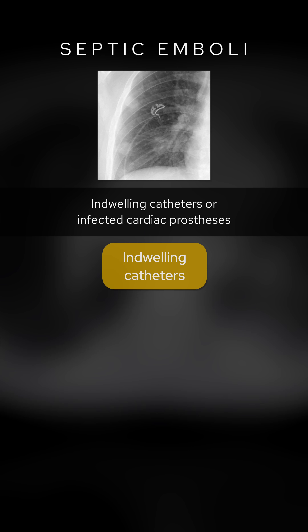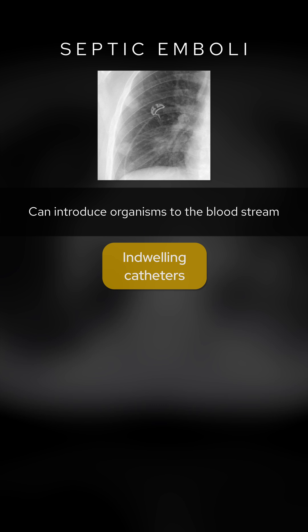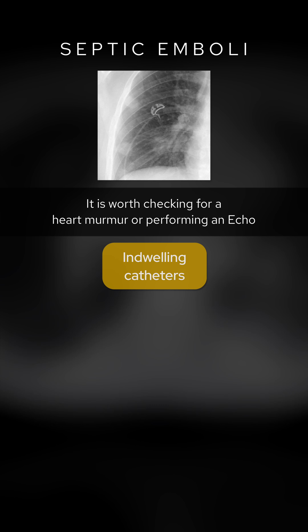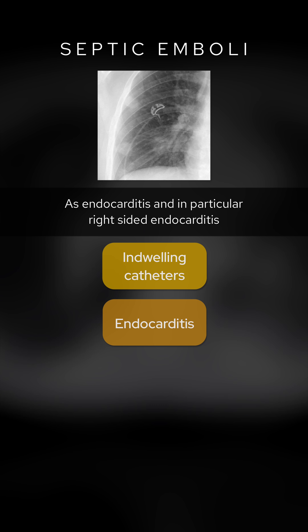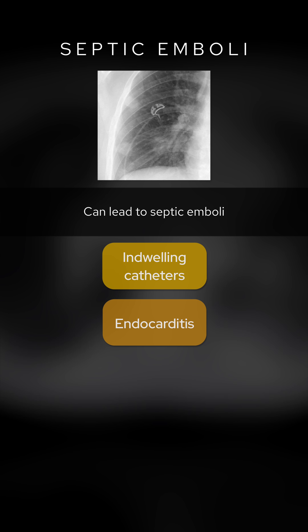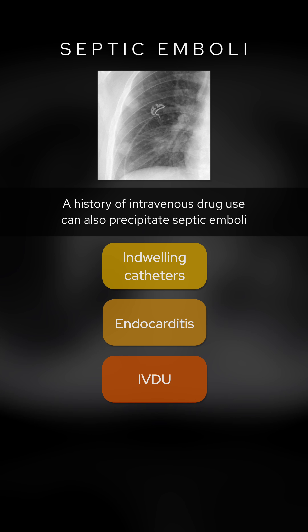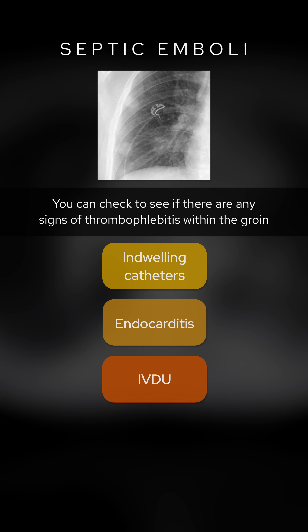Whenever you see what you think may be septic emboli on a CT scan, it's important to hunt for the source. Indwelling catheters or infected cardiac prostheses can introduce organisms to the bloodstream, but there is no history of that here. It's worth checking for a heart murmur or performing an echo, as endocarditis, and in particular right-sided endocarditis, can lead to septic emboli. A history of intravenous drug use can also precipitate septic emboli, so if you have a CT of the abdomen and pelvis, you can check for any signs of thrombophlebitis within the groin.